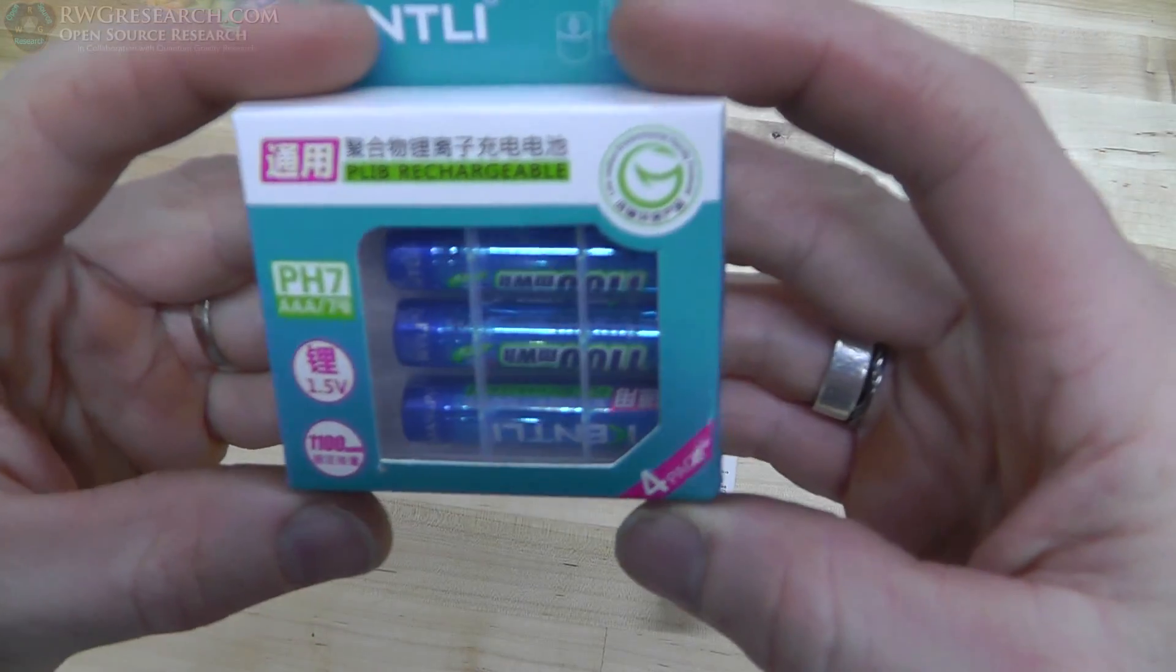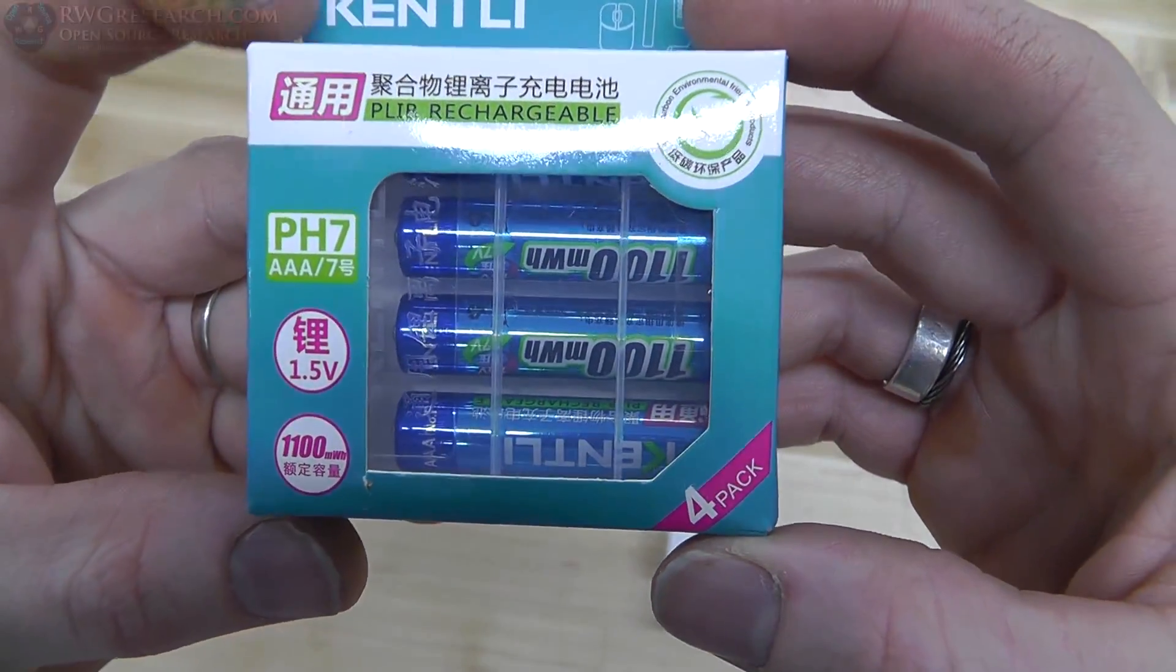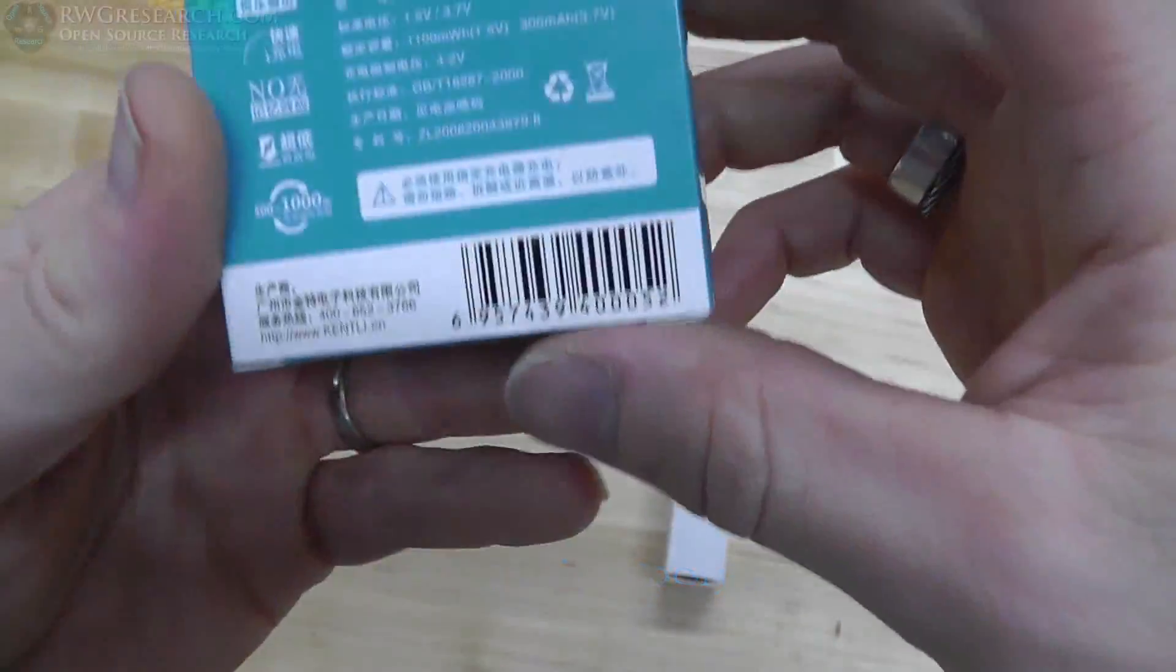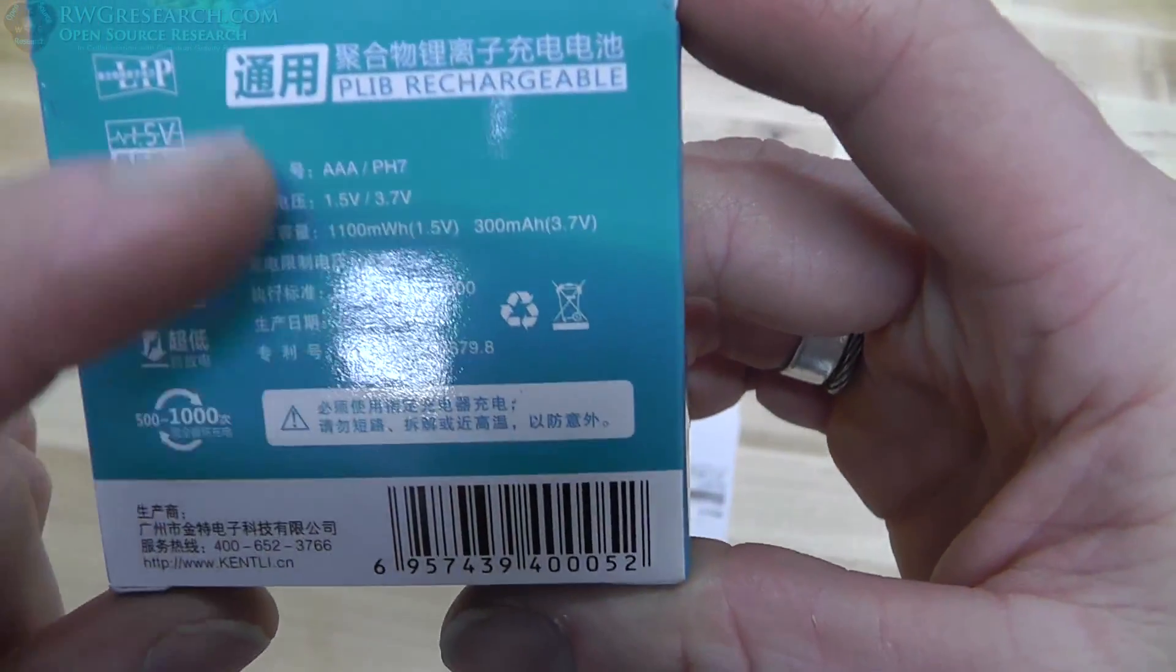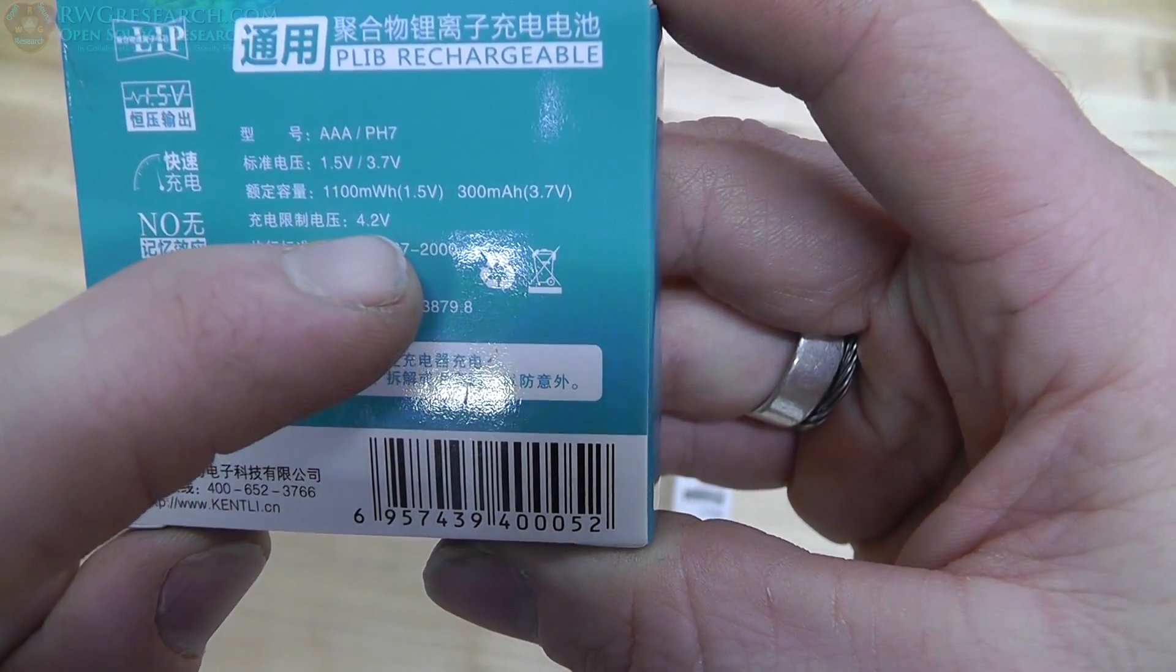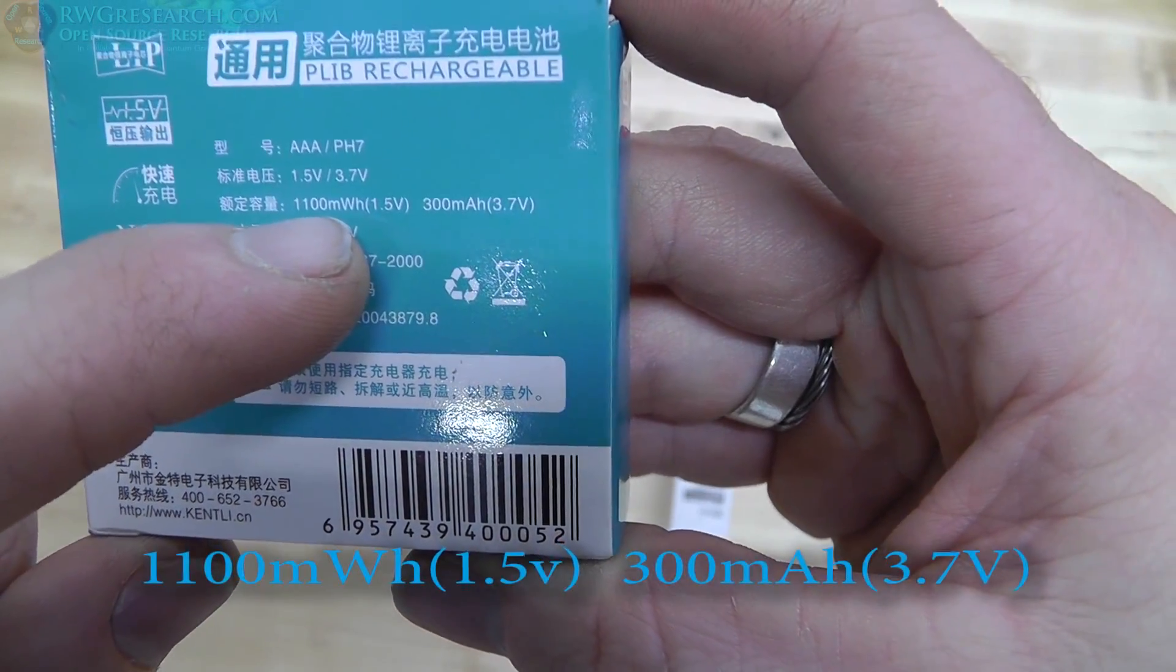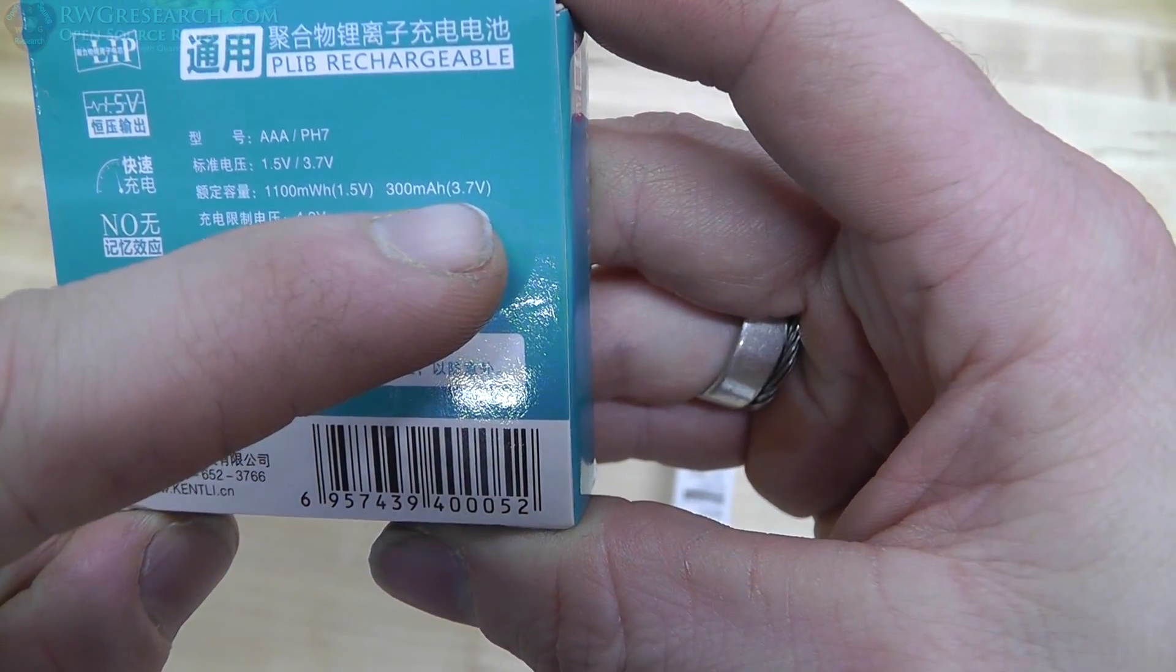Very interesting. They're 1.5-volt, 1,100 milliwatt-hours. Back has some descriptions on here. So this is in Chinese or Japanese or some other language. And very interestingly, here it's got 4.2-volt. I can't read this. I don't know what it is. Here it's got the milliwatt-hours at 1.5-volt, and the amp-hours at 3.7-volt.